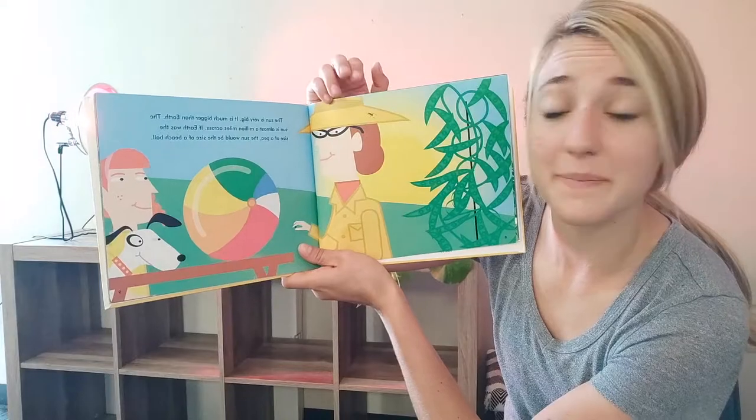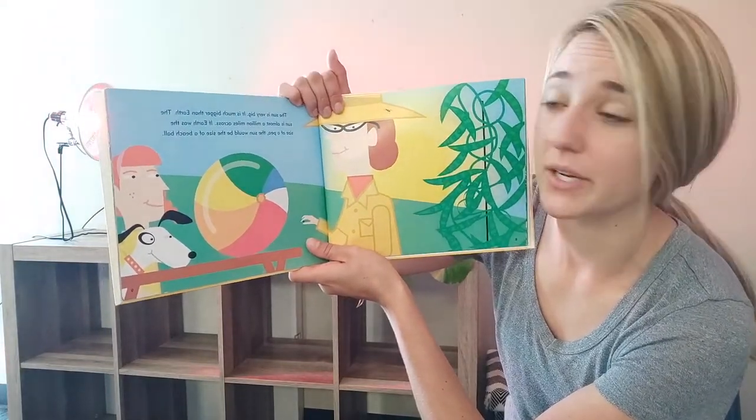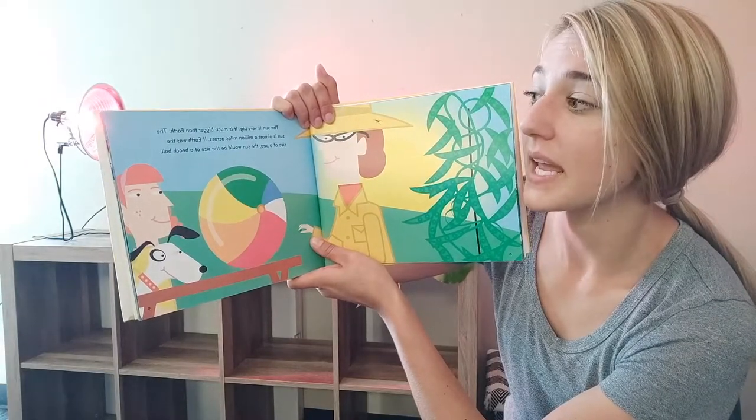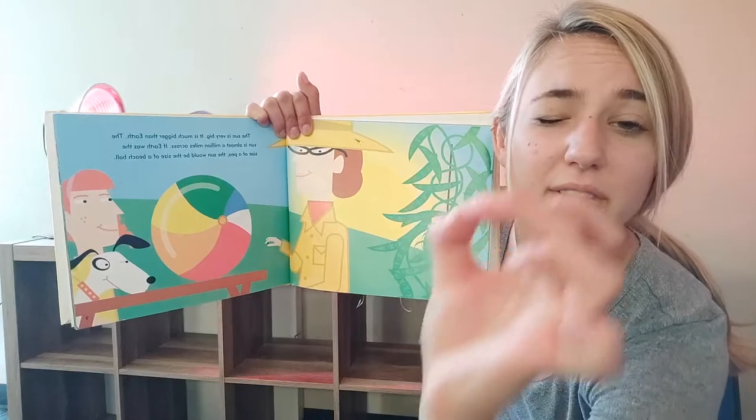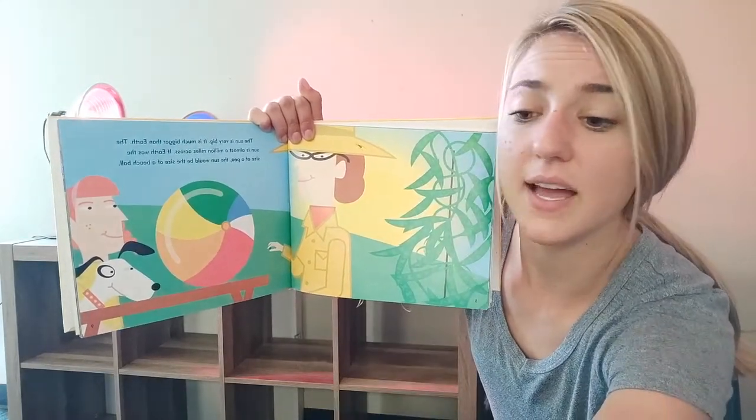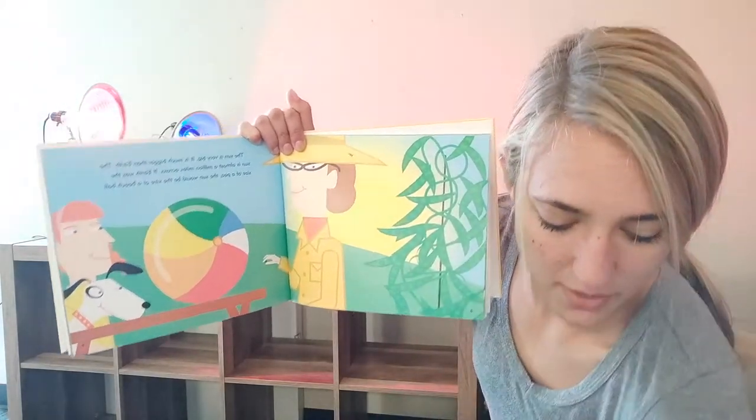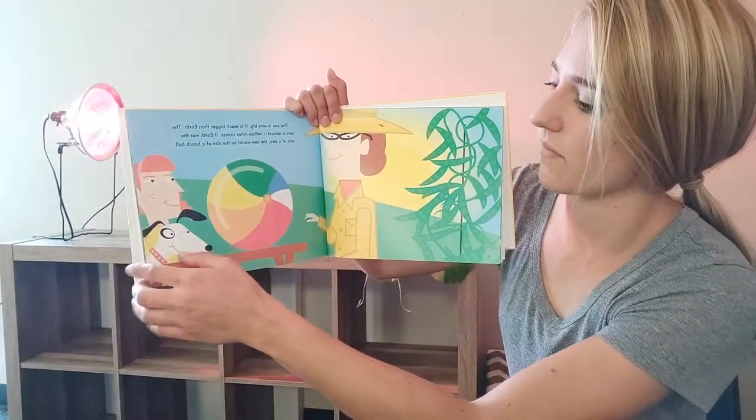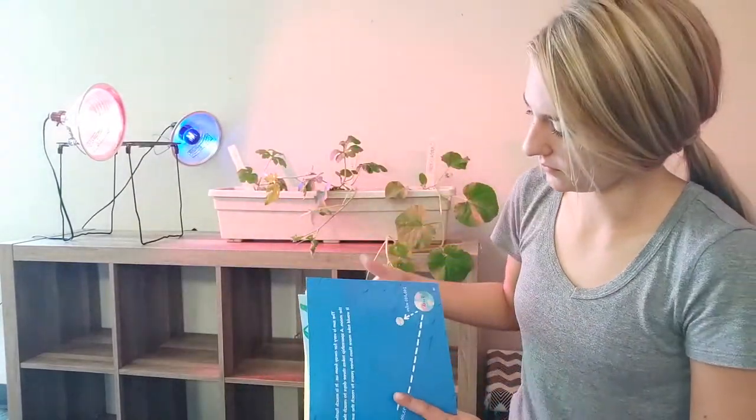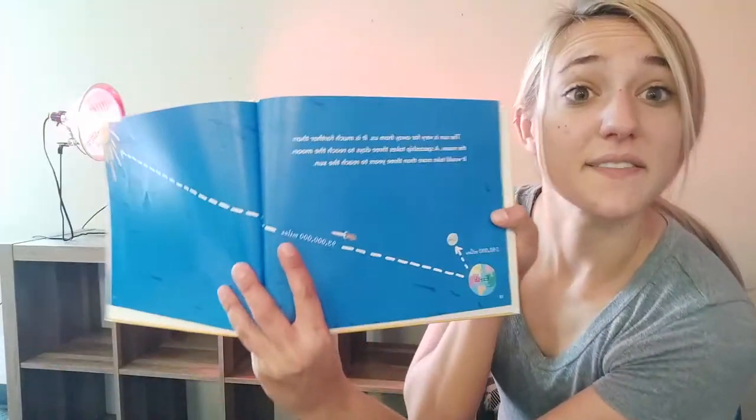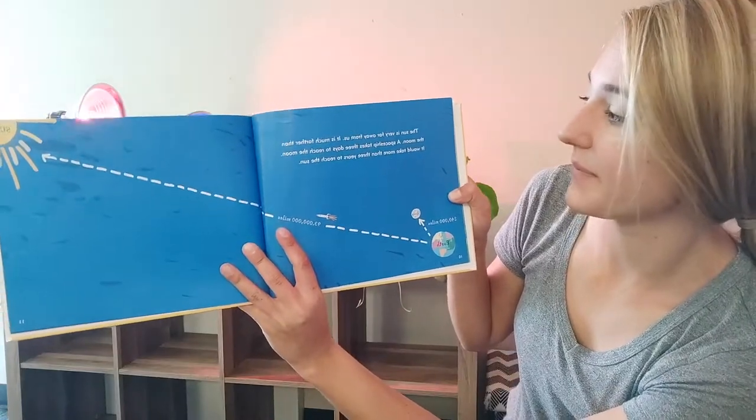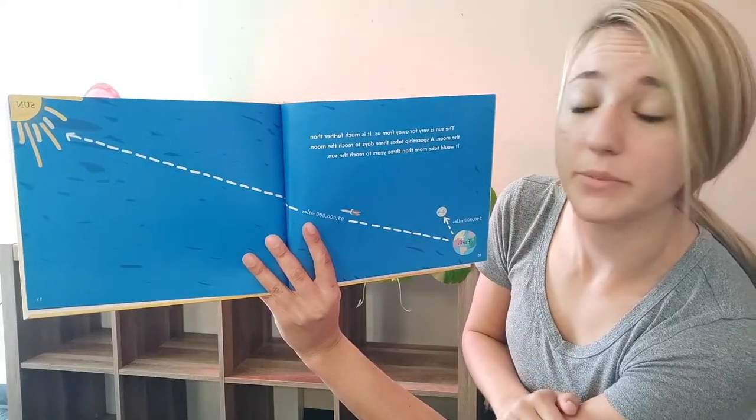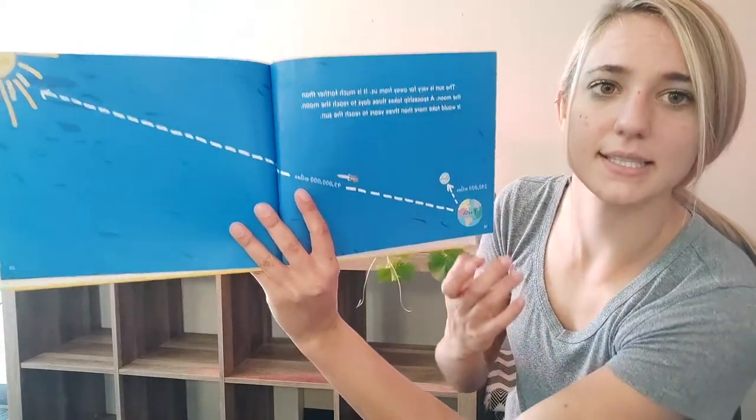The sun is very big. It is much bigger than the earth. The sun is almost a million miles across. If the earth was the size of a pea, remember if the earth was the size of a pea, the sun would be the size of a beach ball. Let's see if I can pull it up. Whoa. The sun is very far away from us. It is much farther than the moon. A spaceship takes three days to get to the moon, but it would take three years to get to the sun.